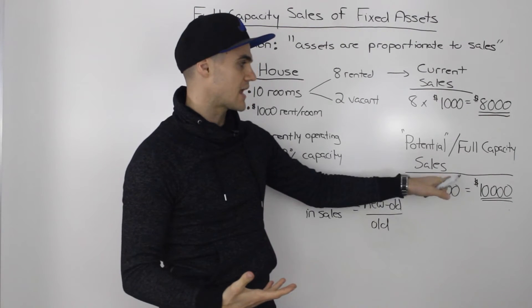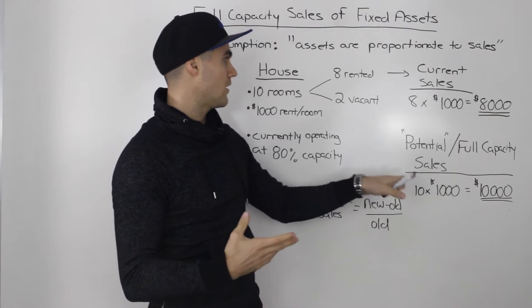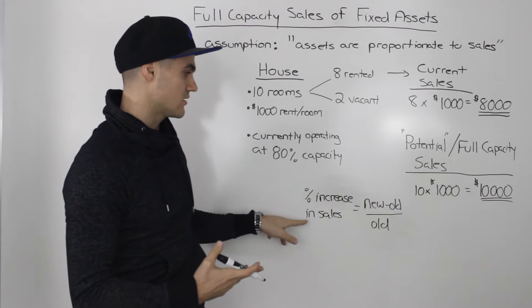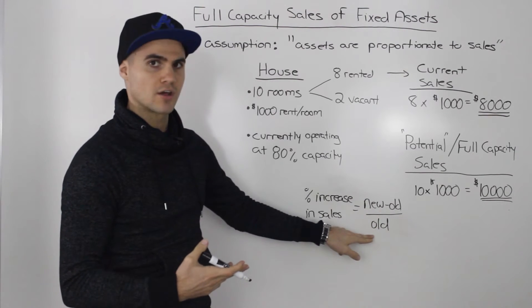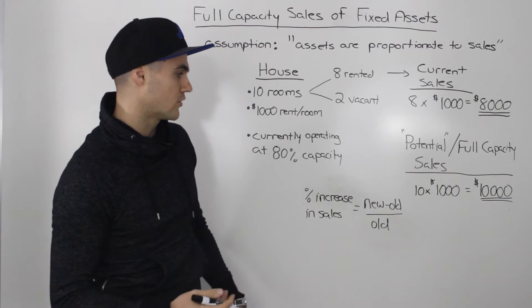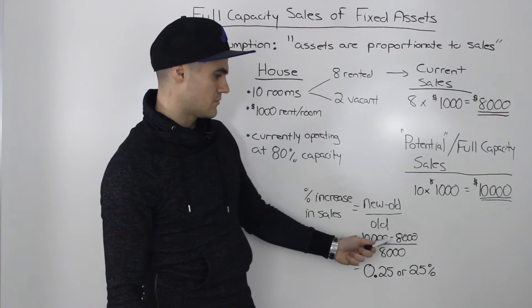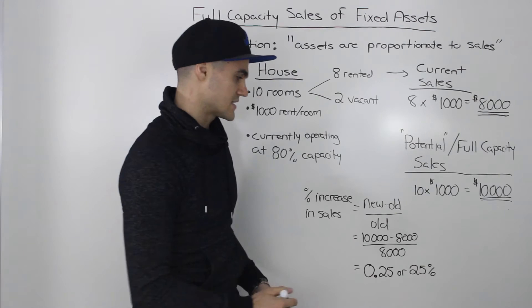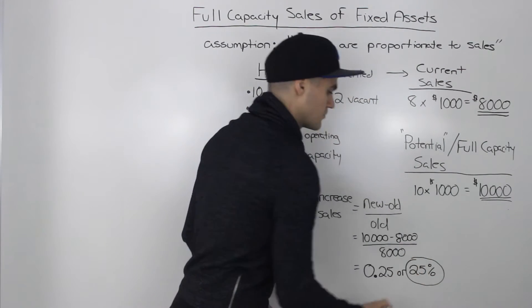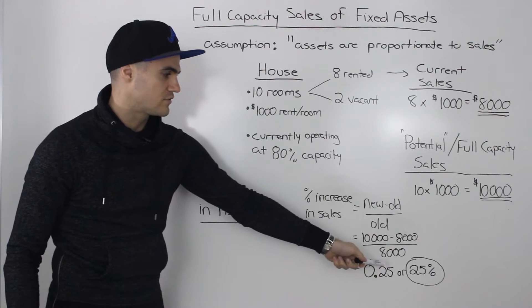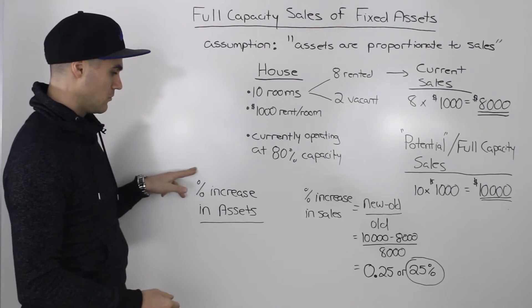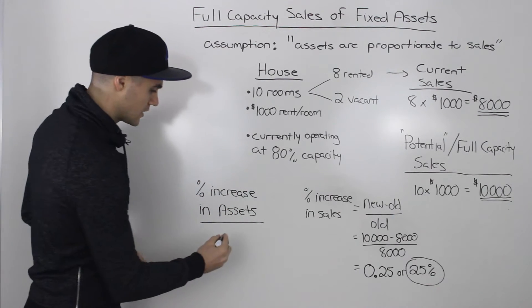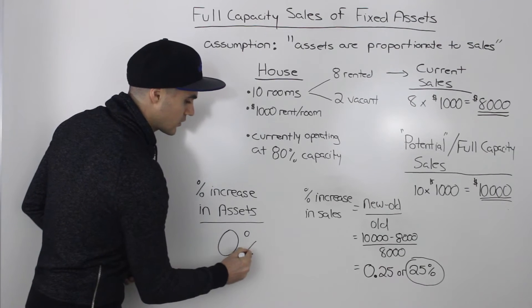So we can potentially increase our sales currently without increasing any assets. To find out the potential increase in sales we use the formula: new amount minus old amount, all over old amount. So ten thousand minus eight thousand, all over eight thousand, gives us a potential increase in sales of twenty-five percent. Now to achieve that twenty-five percent potential increase in sales, how much do we have to increase the assets? Well, it's the same house, so we don't have to increase the assets at all — there's a zero percent increase in assets.